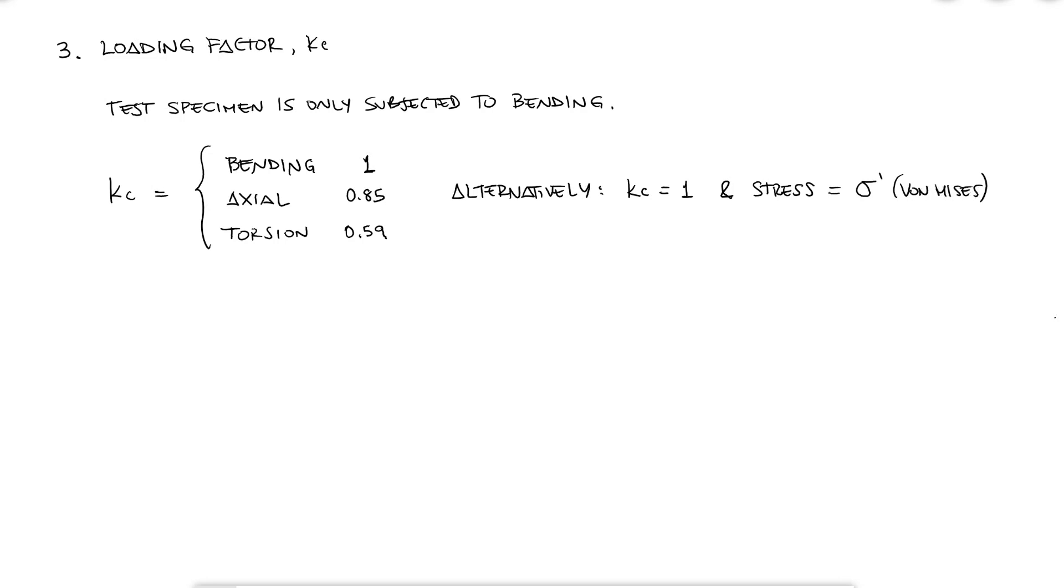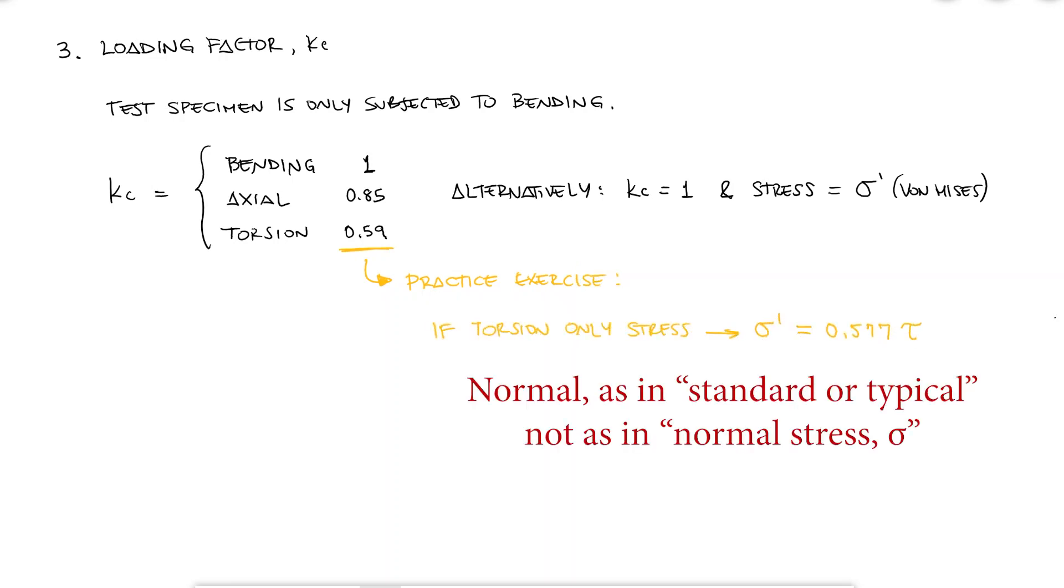A good exercise here is to prove how calculating a von Mises stress from an external torsion load only, which arises from the distortion energy criteria, yields 0.577 times the normal stress. If you can't prove this yourself, make sure to check the procedure in one of the videos in the description below.